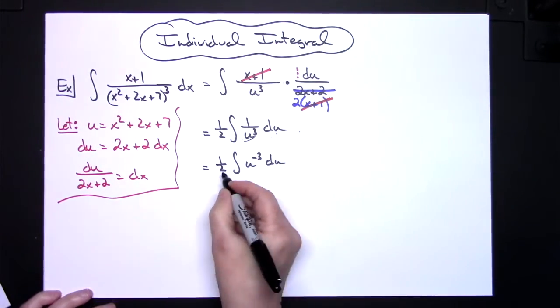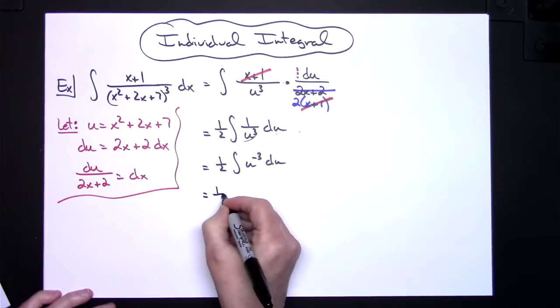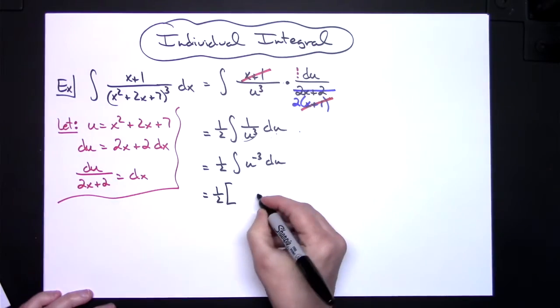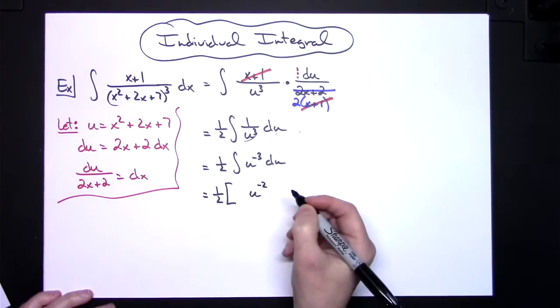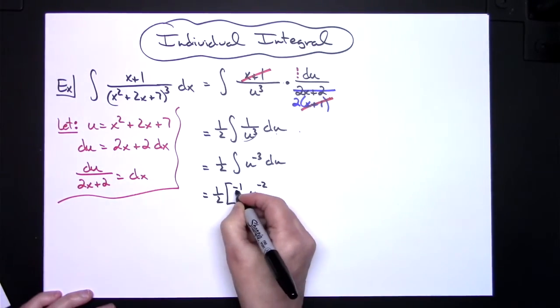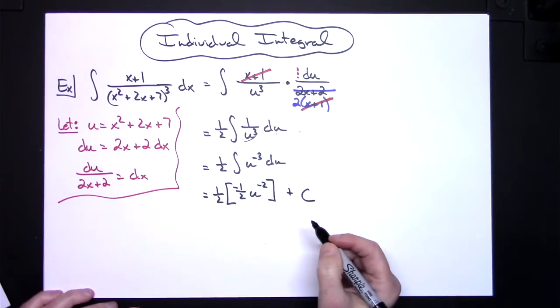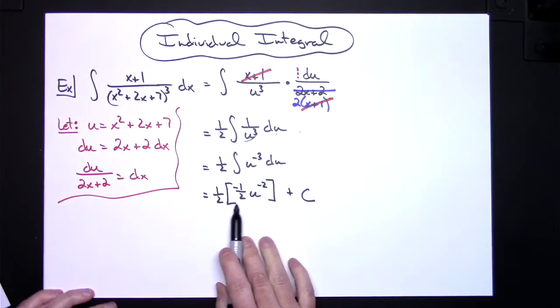Now we can integrate. The 1 half will be out in front, and when I integrate here, if I add one, I'll have u to the negative 2, and in front that would give me negative 1 half. I can put that plus c on because I have completely integrated here.